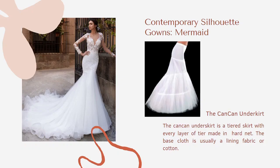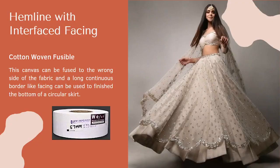You should also be aware of the finishing methods used in hems of skirts and gowns. In this picture you can see the lehenga hemline, which is neatly finished with a fabric facing. This fabric facing is fused with a cotton woven fusible.